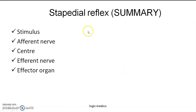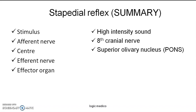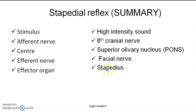In summary: the stimulus for stapedial reflex or acoustic reflex is high intensity sound. The receptor is the hair cells of the organ of Corti. The afferent nerve is the eighth cranial nerve, the vestibulocochlear or auditory nerve. The center is the pons — specifically the superior olivary nucleus of the pons and the motor nucleus of the facial nerve, both part of the brainstem. The efferent nerve is the facial nerve or seventh cranial nerve. The effector organ is the stapedius muscle. Contraction of the stapedius pulls the stapes outside the oval window, stabilizes it, prevents excessive fluid movement in the cochlea, and thereby protects the inner ear.